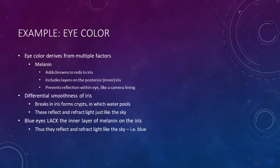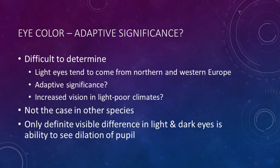One thing that brings eye color adaptation into question: it only happens in humans. Other primates and animals don't adapt eye color geographically the same way. The same species will have the same eye color variation regardless of where they're from — cats, dogs, cows, bears. They don't adapt in the same way humans do.